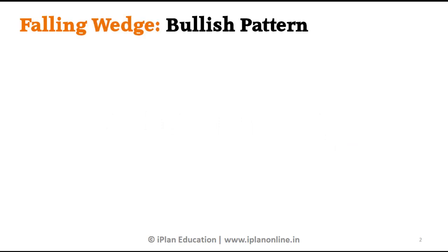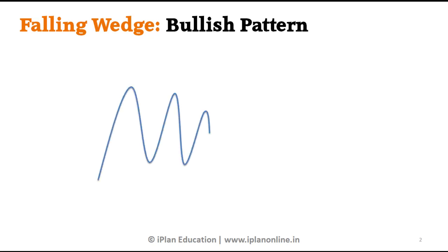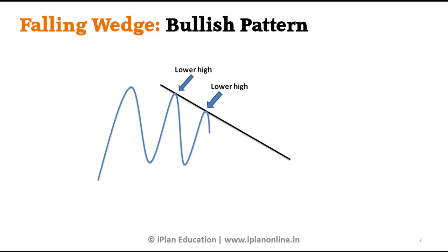Let's understand a falling wedge. A falling wedge is a bullish pattern. What we see is a downtrend — a lower high previous, and then from the previous high it's a little lower. You see another lower high, meaning the second high is lower than the previous high. We draw a line connecting both lower highs.